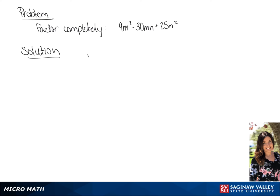We are going to factor 9m squared minus 30mn plus 25n squared. We're going to split this into two binomials, and we know that 9m squared and 25n squared are both perfect squares.